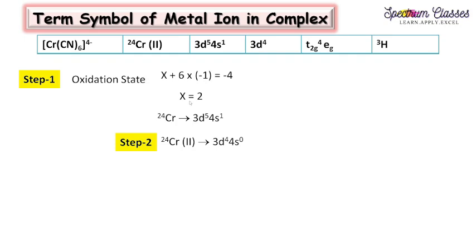The next step is to write the electronic configuration. Chromium is element 24, so it has 4 electrons in the d orbital and 2 in the s orbital. However, for greater stability — this is an exception — the configuration is d5 s1 since both are half-filled. As it is in the second oxidation state, two electrons must be removed: one from the s orbital and one from the d orbital.